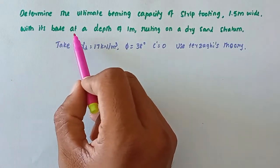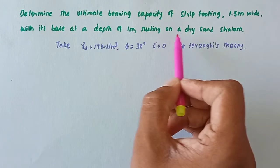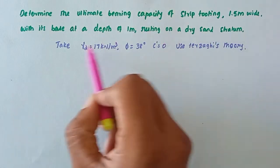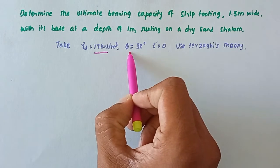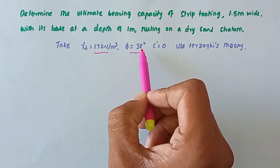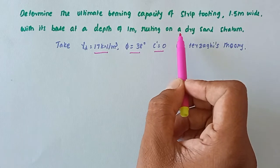with its base at a depth of 1m, resting on a dry sand stratum. Take γd = 17 kN/m³, φ = 38°, c = 0 (because this is cohesionless soil, dry sand). Then use Terzaghi's theory.